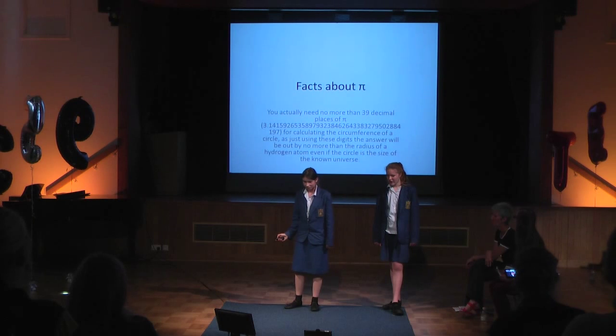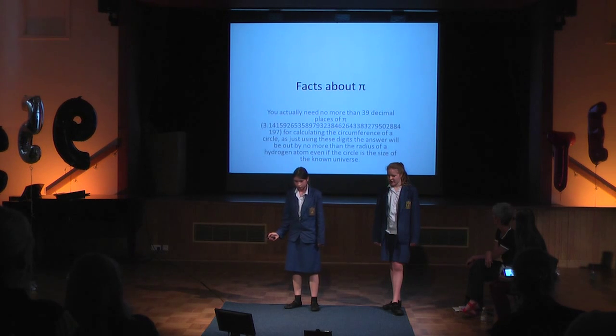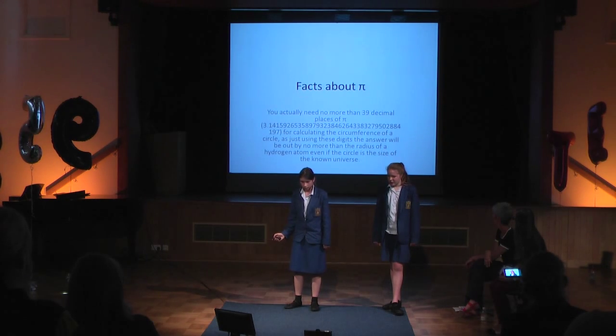Pi has been studied for nearly 4,000 years. Some people believe that pi contains answers about the universe. Albert Einstein was born on National Pi Day. In the Star Trek episode 'Wolf in the Fold,' Spock beats the evil computer by giving it the instruction to compute the last decimal place of pi, which occupies it so it can't do anything else. You actually need no more than 39 decimal places for calculating the circumference of a circle — using just these digits, the answer will be out by no more than the radius of a hydrogen atom, even if the circle is the size of our known universe.